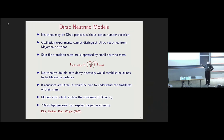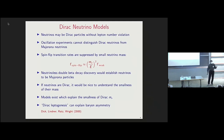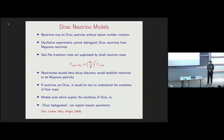The main difference is that if we observe neutrinoless double beta decay, then we know the neutrino is not a Dirac particle. But assuming it is a Dirac particle, it would be nice to understand why it is so light. The electron and the top quark are Dirac particles, yet their masses are much higher compared to the neutrino mass. I want to show that there exist models where this smallness happens in a natural way.